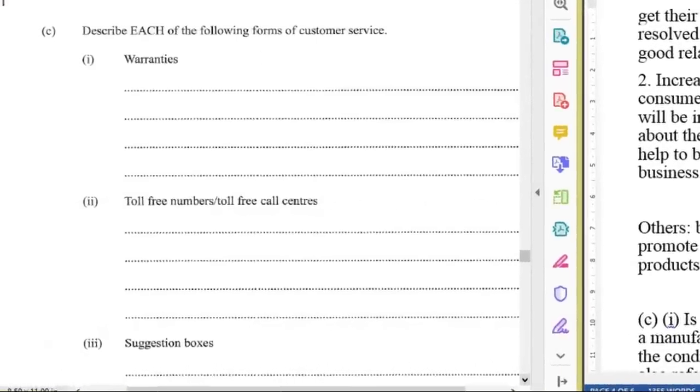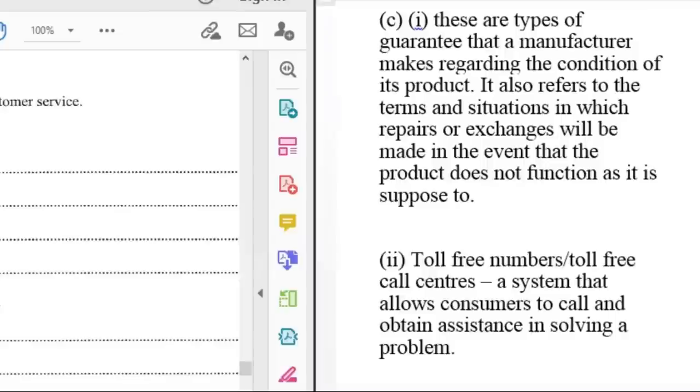C says describe each of the following forms of customer service: warranties, toll-free numbers or call centers, and suggestion boxes. Warranties are types of guarantees that a manufacturer makes regarding the condition of its product. It also refers to the terms and situations in which repairs or exchanges will be made in the event that the product does not function as it is supposed to.